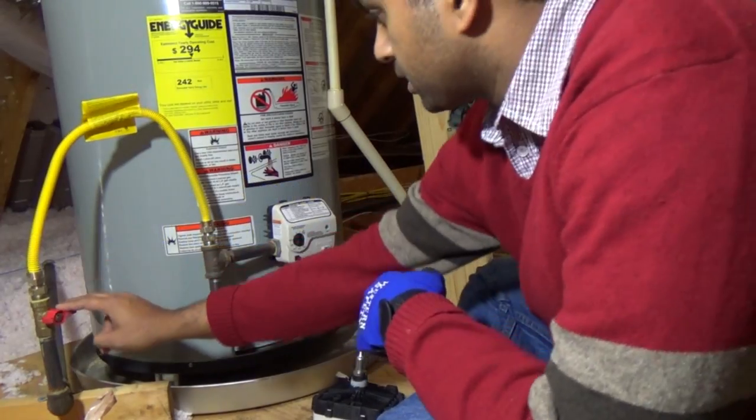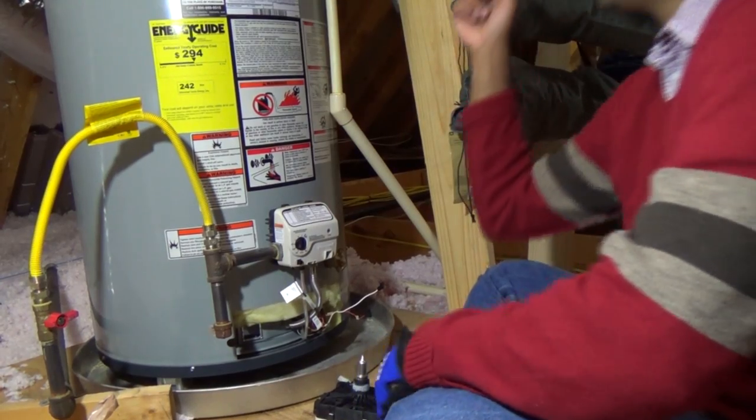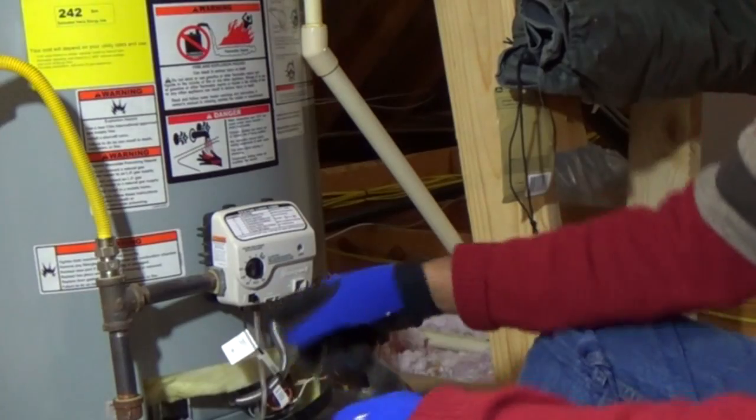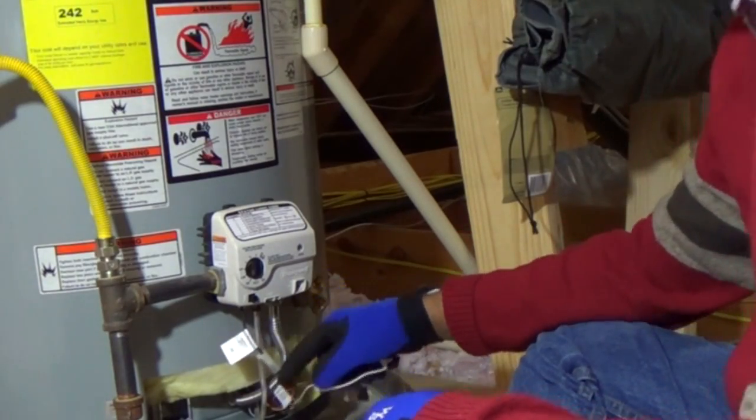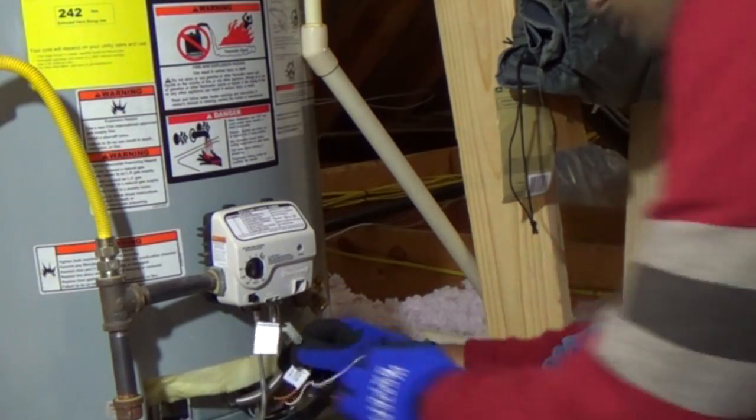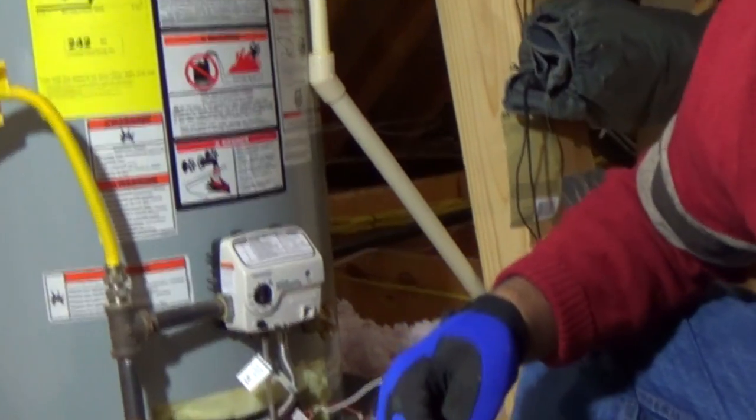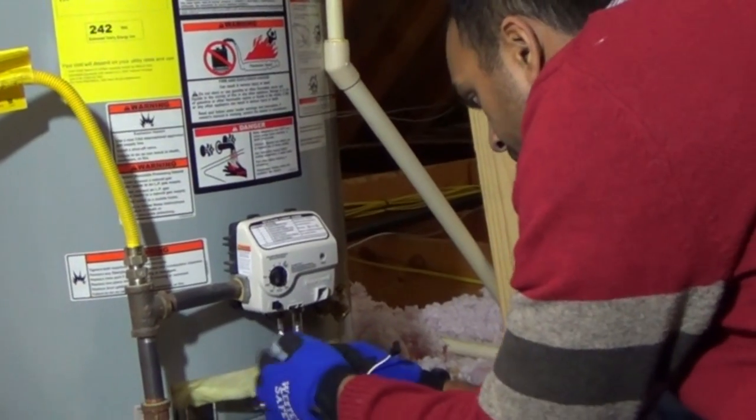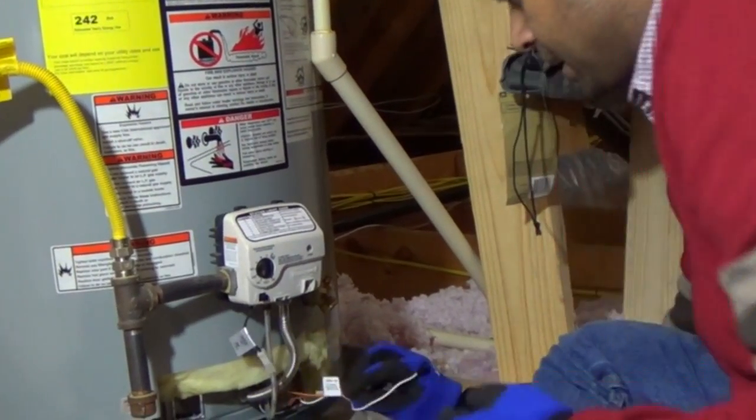So first thing is turn off your gas valve, make sure your water valves are closed. This is the gas inlet. First thing we need to do is disconnect all of these cables here. So they should all just come off. They're just snap-ins like that.